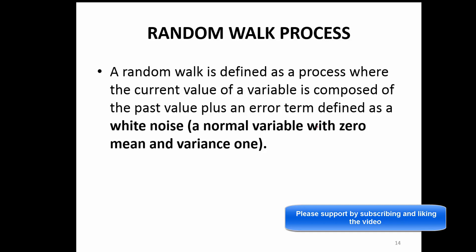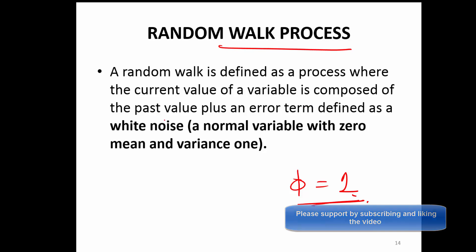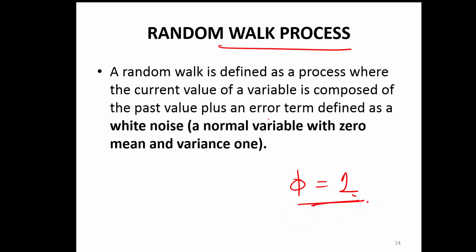We will talk about the random walk process. We are interested in the stochastic trend, and one of the special cases of stochastic trend is the random walk process. This happens when psi takes a value of 1. A random walk is defined as a process where the current value of the variable is composed of the past value plus an error term.